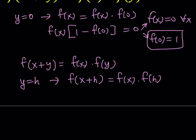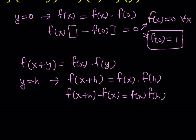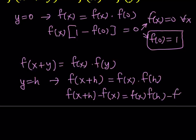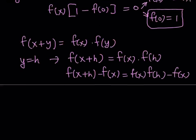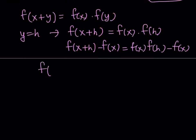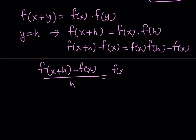Now I'd like to subtract f of x from both sides — my goal is to basically get to the difference quotient. I can do that by making the left-hand side look like f of x plus h minus f of x, divided by h. So the next step is dividing both sides by h. On the right-hand side, I can factor out f of x, giving me f of h minus 1, all over h.